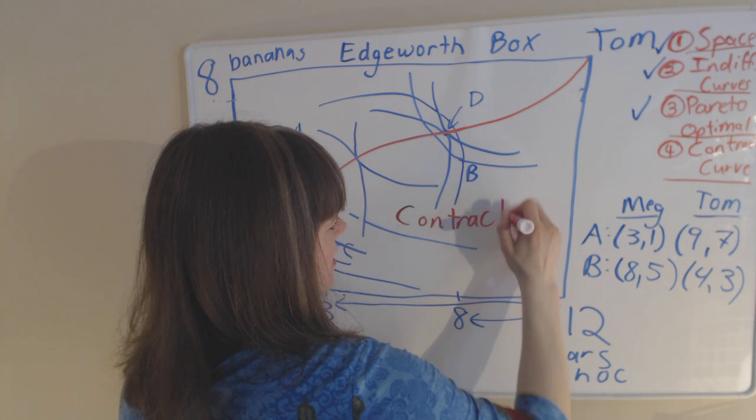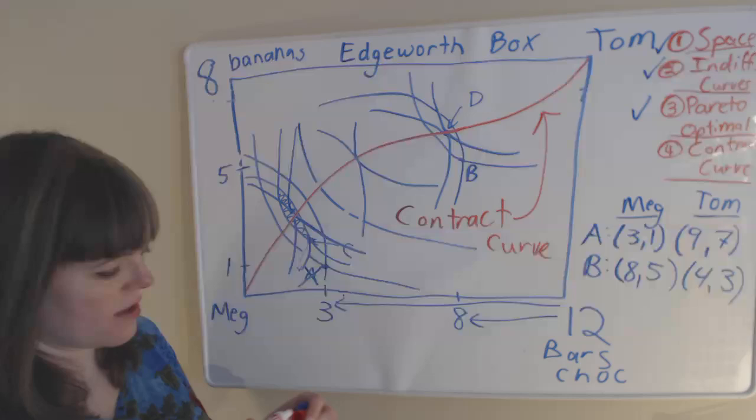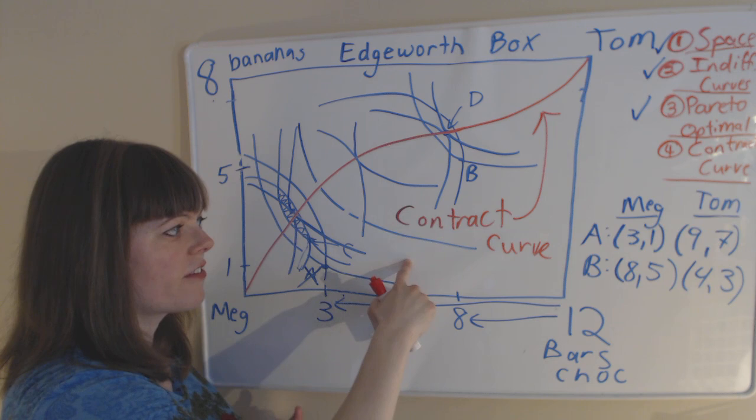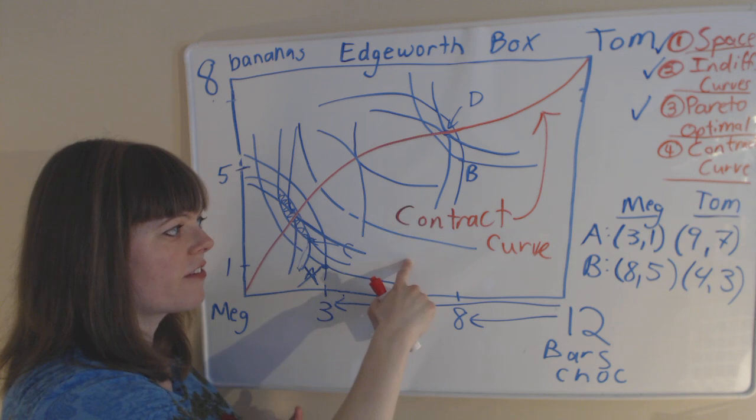So let me label the contract curve. Contract curve. And we know that if the point is not on the contract curve, the two people can trade to make them both better off. So the contract curve is the set of all points that are Pareto optimal. And that's how you think about Edgeworth boxes.